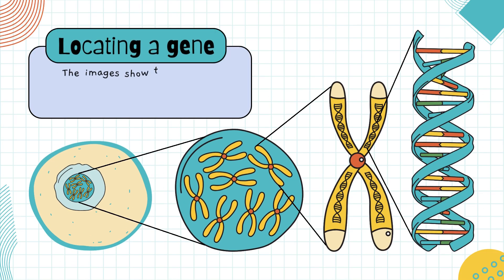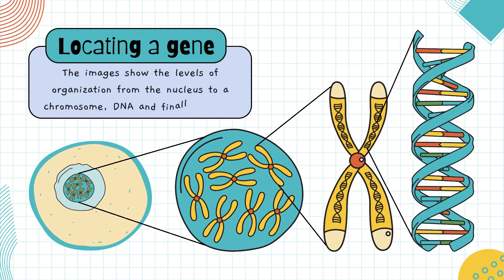So, how do we find a gene? It starts in the nucleus of the cell — that's the control center. Inside the nucleus are chromosomes, and each chromosome is packed with DNA. Zoom in closer, and you'll find specific sections of DNA. These are genes: small segments with powerful instructions. It's like finding a chapter in a book, on a shelf, in a giant library — organized, precise, and packed with information.